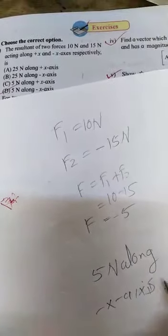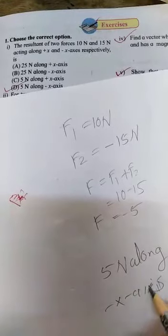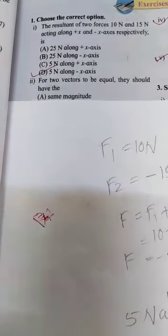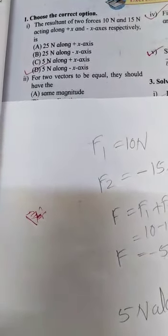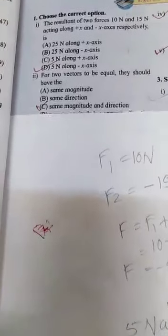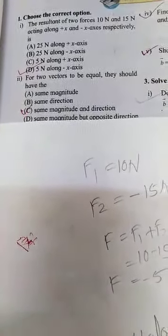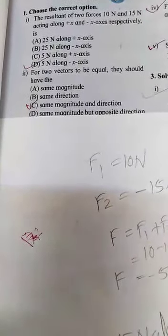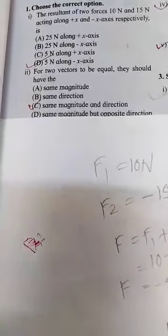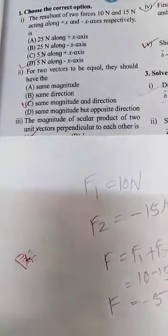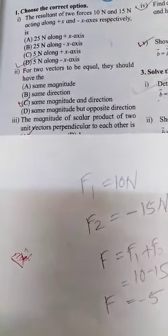The answer is 5 newton along the negative x-axis. For the second question: if two vectors are equal, they should have the same magnitude and same direction. If two vectors have the same magnitude and same direction, then they are equal.